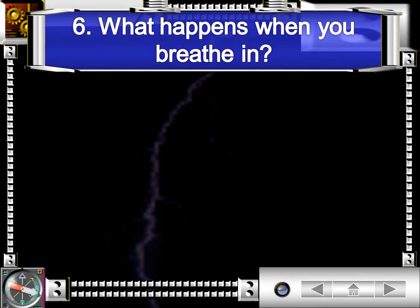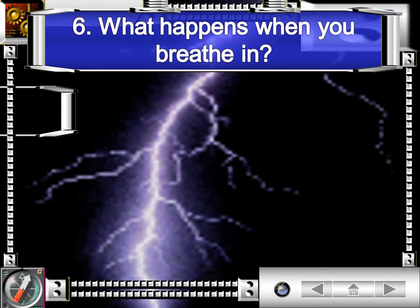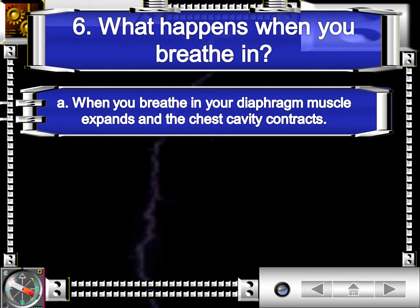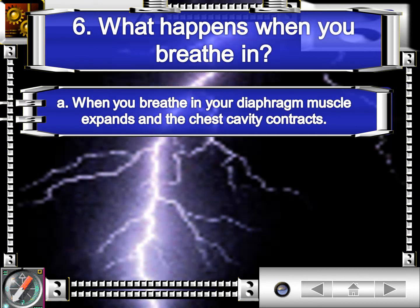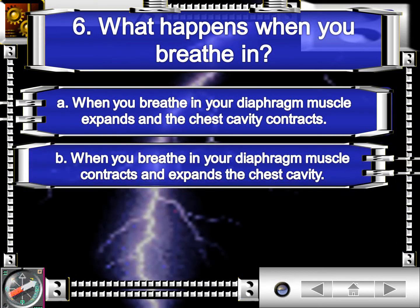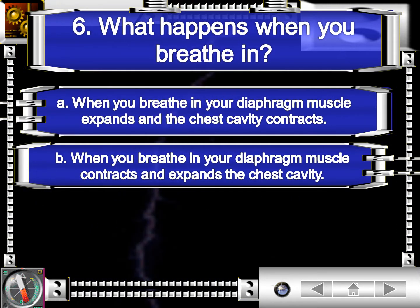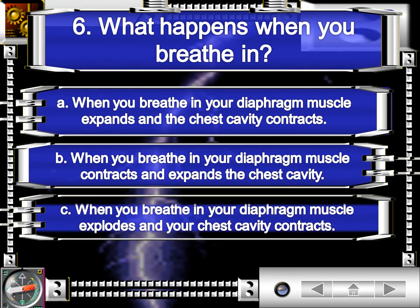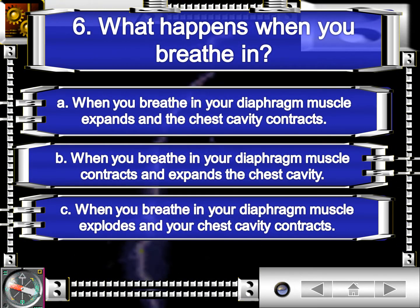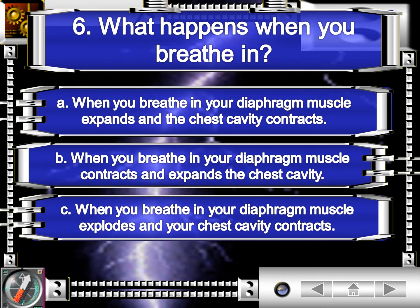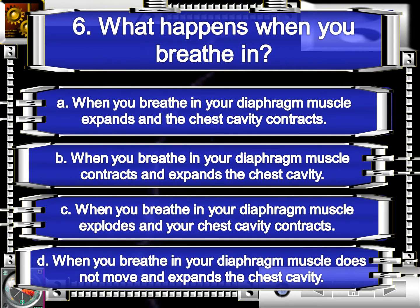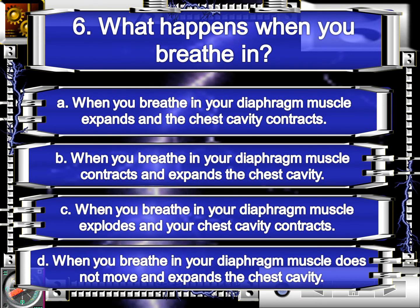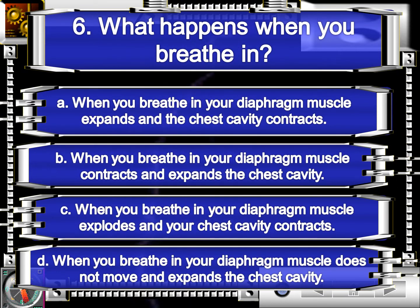For question number six. What happens when you breathe in? Letter A, when you breathe in, your diaphragm muscle expands and the chest cavity contracts. Letter B, when you breathe in, your diaphragm muscle expands and expands the chest cavity. Letter C, when you breathe in, your diaphragm muscle explodes and your chest cavity contracts. Or letter D, when you breathe in, your diaphragm muscle does not move and expands the chest cavity. The correct answer is letter B: when you breathe in, your diaphragm muscle contracts and expands the chest cavity.